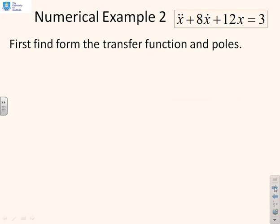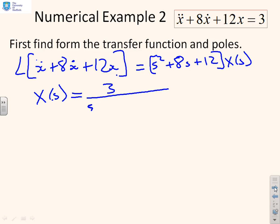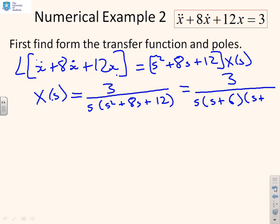Here's another example then. I've got ẍ + 8ẋ + 12x equals 3. If I take Laplace of ẍ + 8ẋ + 12x, then what I get is (s² + 8s + 12) into x of s. Remember, ignoring initial conditions. If I take Laplace of the right hand side as well as being 3 over s, I'm going to get x of s equals 3 over s(s² + 8s + 12). Now, I can factorize this by inspection. I can see I've got factors s, (s + 6), and (s + 2).